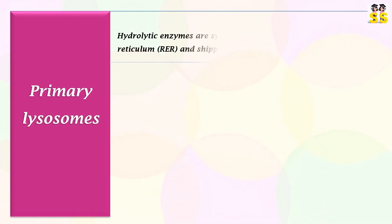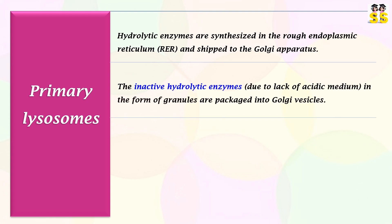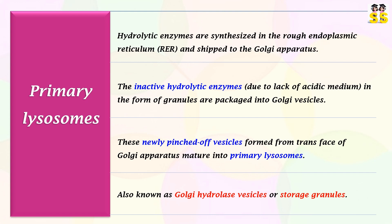Regarding primary lysosomes: the hydrolytic enzymes are synthesized in the rough endoplasmic reticulum and shipped to the Golgi apparatus. These enzymes remain inactive due to lack of acidic medium and are packaged into Golgi vesicles in the form of granules. These newly pinched-off vesicles formed from the trans-Golgi mature into primary lysosomes, also known as Golgi hydrolase vesicles or storage granules.